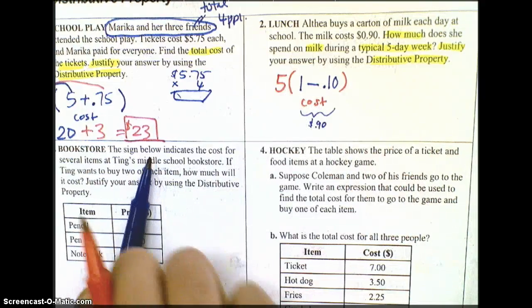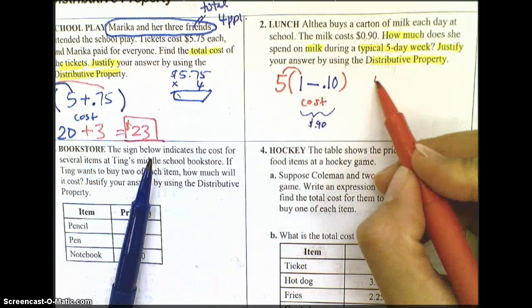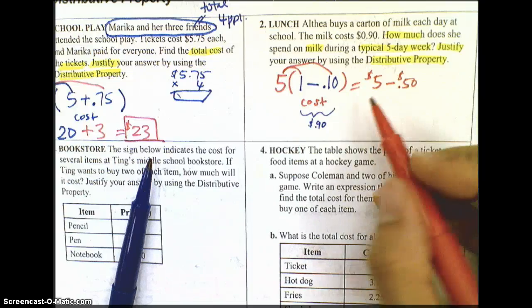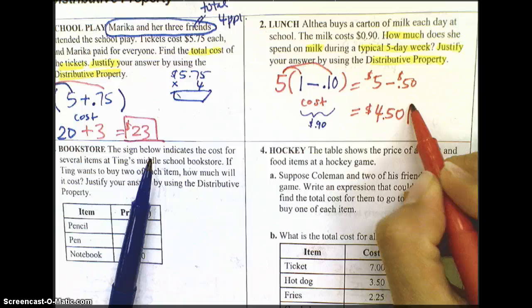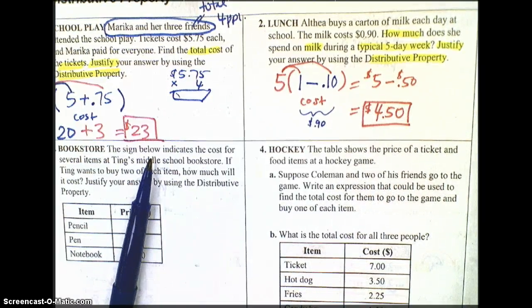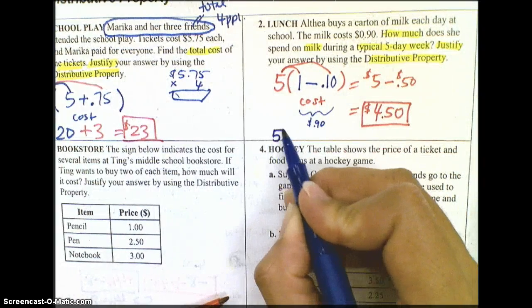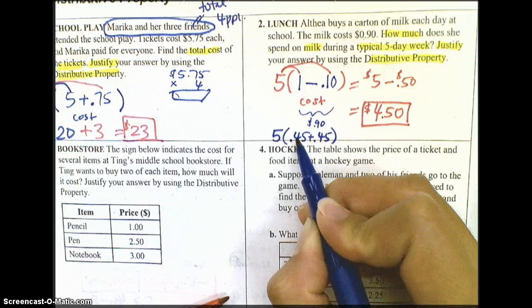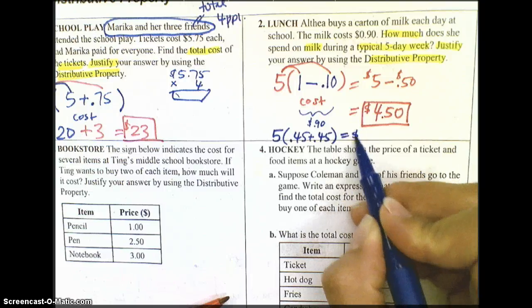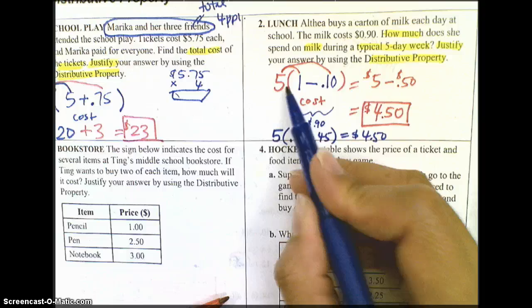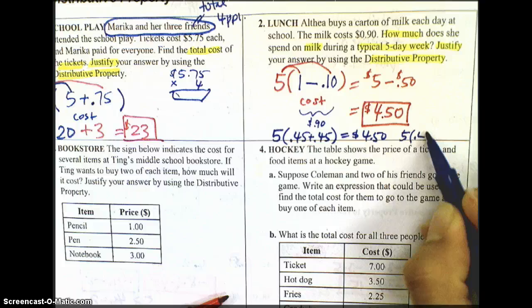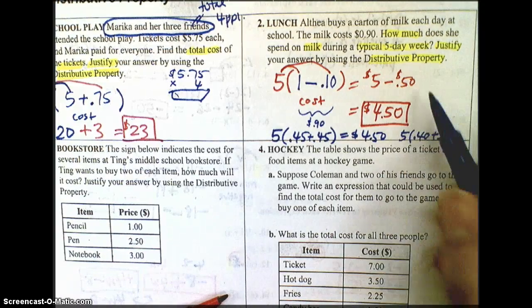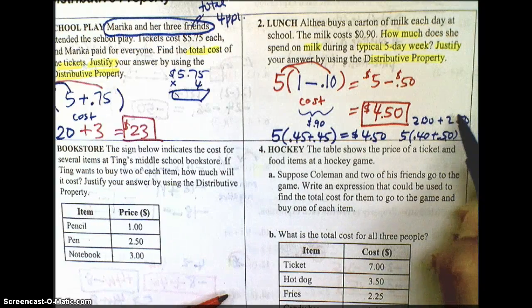This is really nice, actually, because when we do a mental math, we could multiply five with one to get $5 and five with 10 cents and then subtract 50 cents from it, which is really easy to do in our head because we know that that's $4.50 for the cost of her milk. That's even easier than if you did choose to set up your problem not using subtraction. You might have written five times 45 cents plus 45 cents. But notice how 45 is much harder to multiply with five versus a dollar times five or 10 cents times five is so much easier.